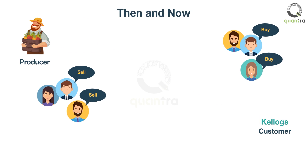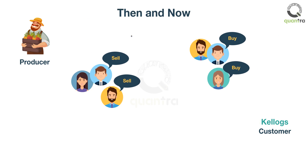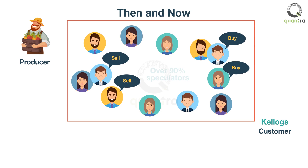What started out as a convenience for farmers and their customers has now grown into an enormous global asset class, where it is estimated that over 90% of participants are speculators. From simple beginnings of a few commodity-based contracts, you can now trade almost any type of underlying asset through futures contracts.